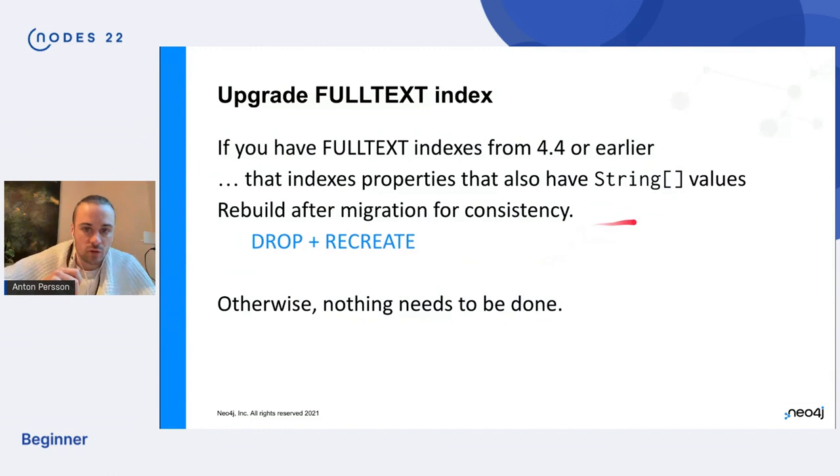So that's kind of the updates to full text index. It has support for string arrays to upgrade your full text indexes. You don't need to do anything really, unless if you have full text indexes and the properties that you have indexed also contain string array values. If that's the case, then those are not yet indexed in 4.4. So in 5.0 or in Neo4j 5, you will need to drop and recreate those indexes in order to have a consistent index. Otherwise you don't need to do anything.